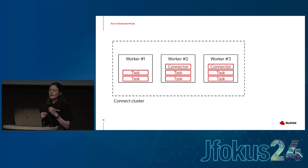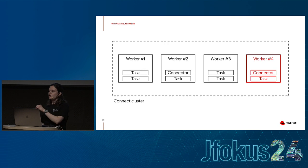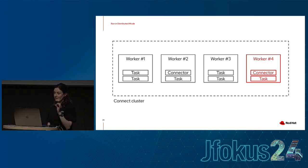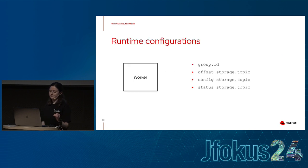In distributed mode, Connect distributes connector and task processes across available workers. If you scale up and add more workers, the workload can be evenly distributed. If one worker goes down, the Connect runtime will reschedule running connectors and tasks on a different worker. You can also start in distributed mode with a single worker and scale up later, whereas if you start in standalone mode you'd have to remove that worker and switch — so just go with distributed mode.